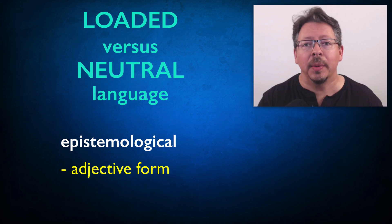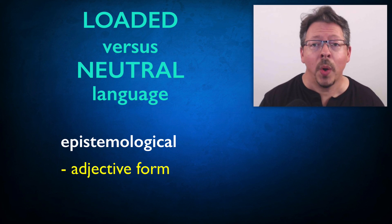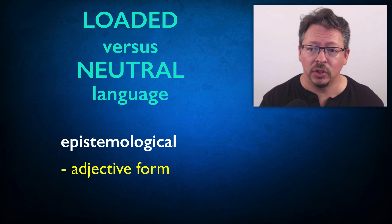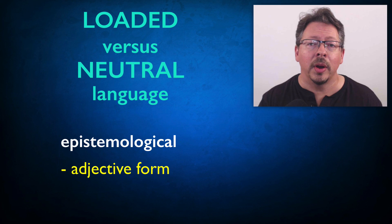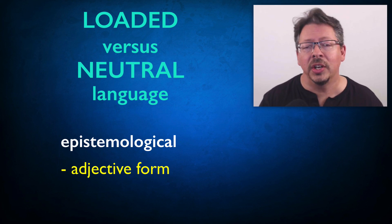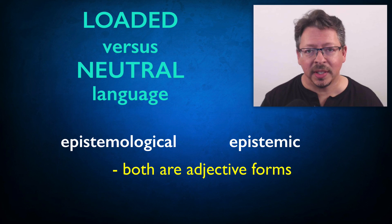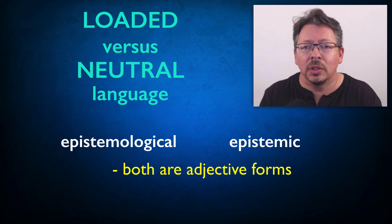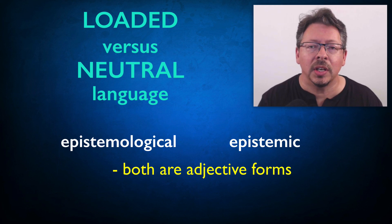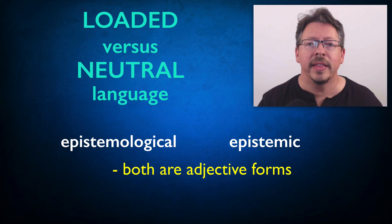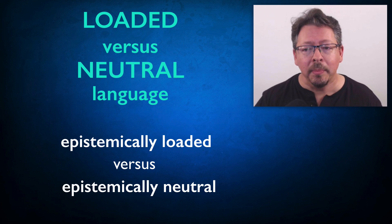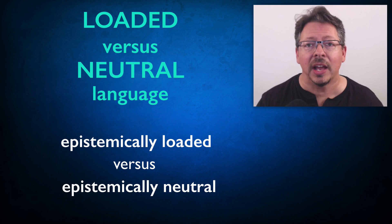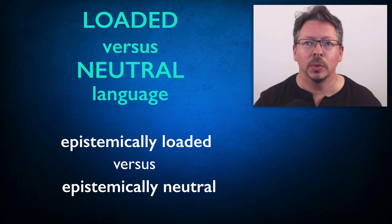The adjective form is epistemological. An epistemological question is a question about knowledge. An epistemological assumption is an assumption about knowledge, or about issues that connect in some way to the nature and origins of knowledge. The word epistemic is just a variant of the same adjective, but with fewer syllables — sometimes it's just more convenient to say it this way. An epistemic issue is just an epistemological issue; they mean the same thing. So when I describe a word or term as epistemically loaded, I mean that the term presupposes something that has to do with knowledge. This can be a tricky concept, so we'll ease into it.